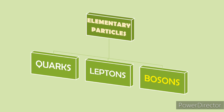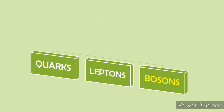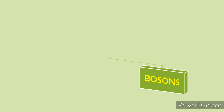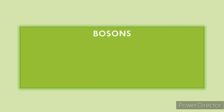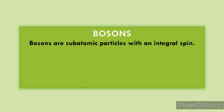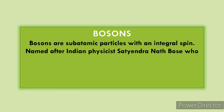From three types of elementary particles — quarks, leptons, and bosons — today we are going to discuss the third type of elementary particles. Bosons are a kind of elementary particle whose spin is an integer number, so they have an integral spin. The last type of elementary particles we read about had half-integral spin, such as quarks or leptons.